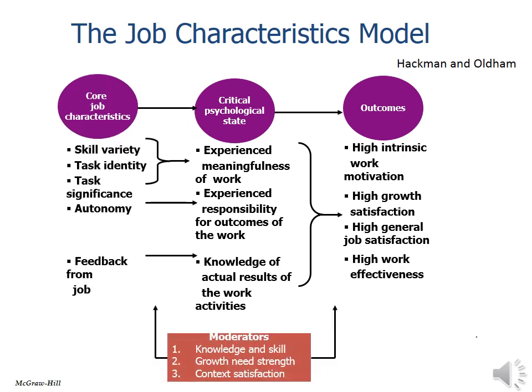When we talk about job design, the most popular model is the job characteristics model. This model focuses on five characteristics: skill variety, task identity, task significance, autonomy, and feedback from the job. These characteristics result in a critical psychological state and preferable outcomes.